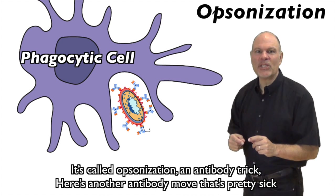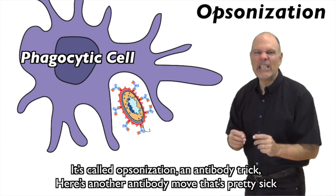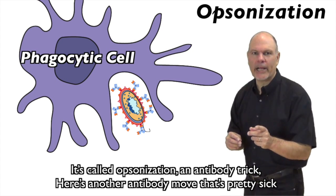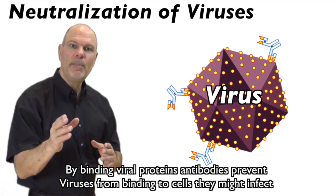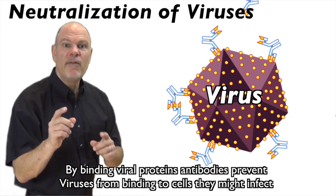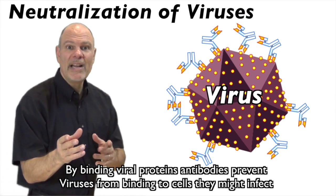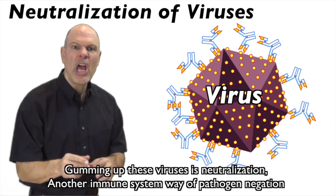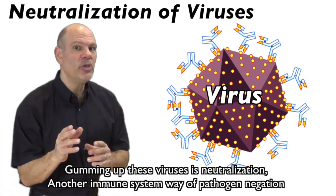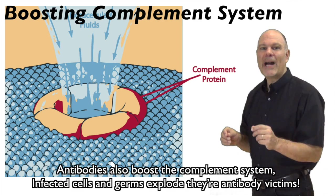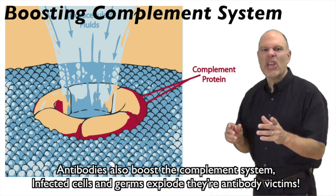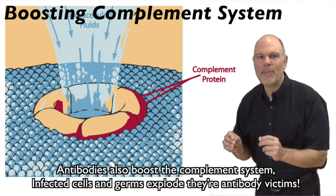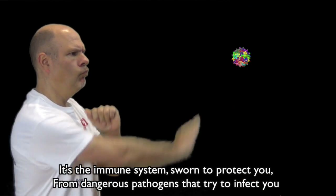Antibodies act like a tag so that phagocytes can put those germs inside the bag — that's called opsonization, an antibody trick. By binding viral proteins, antibodies prevent viruses from binding to cells they might infect — that's called neutralization, another immune system way of pathogen negation. Antibodies also boost the complement system — infected cells and germs explode, their antibody victims.